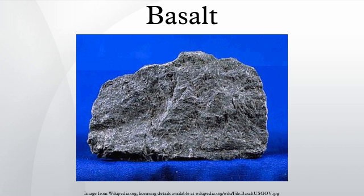Alkali basalt is relatively poor in silica and rich in sodium. It is silica under-saturated and may contain feldspathoids, alkali feldspar, and phlogopite. Boninite is a high-magnesium form of basalt that is erupted generally in back-arc basins, distinguished by its low titanium content and trace element composition.